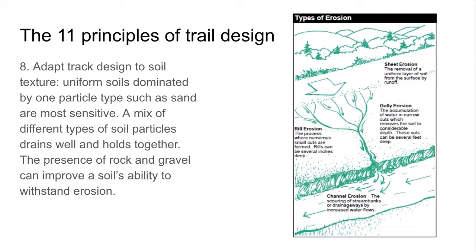The next principle is soil type. When we do some fieldwork, we'll notice that different areas — even at Wayne Richards — have different soil types. Designing the track to meet the soil texture is important. Some areas might need to be flattened out because they're at more risk of erosion. When you combine a steep slope with sandy soil and water, you'll get erosion. That might mean some areas need to be flattened out, or rocks and gravel need to be infilled to ensure erosion isn't taking place. These are the different types of erosion we want to avoid when designing and maintaining sustainable mountain bike trails.